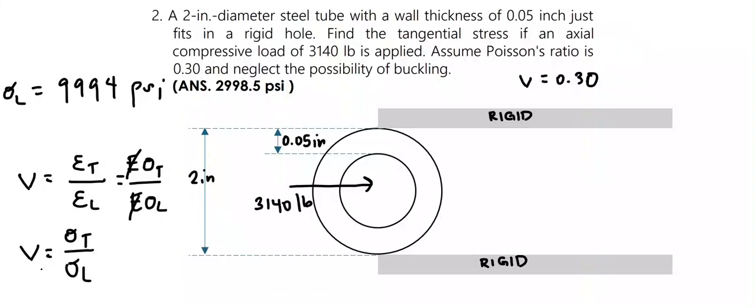Knowing the value for ν (Poisson's ratio) equals 0.30, we can solve for tangential stress, given that the longitudinal stress equals 9,994 psi.